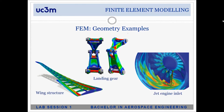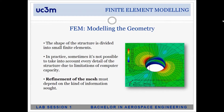Here are some examples of how finite element analysis works. On the left we have a wing structure showing how stresses are distributed. In the center we have a landing gear link, also showing stress distribution. On the right is the inlet of a jet engine, likely analyzing the impact behavior of a fan blade. Depending on how coarse or fine our mesh is, we get better or worse results. The process of increasing the number of elements is called mesh refinement.